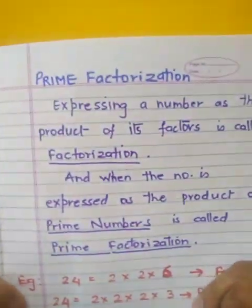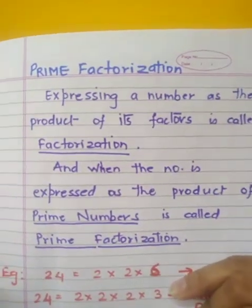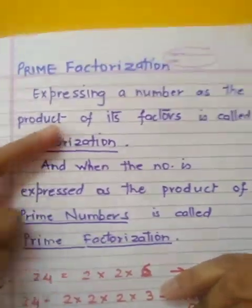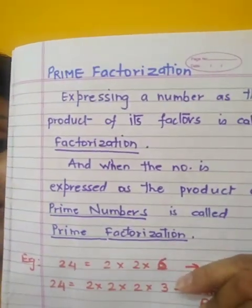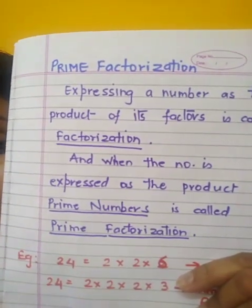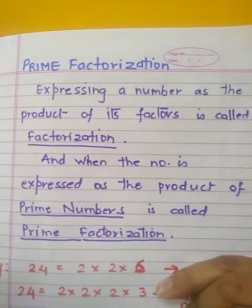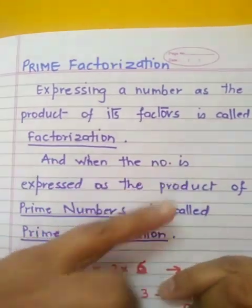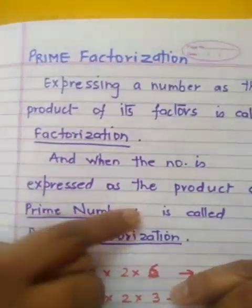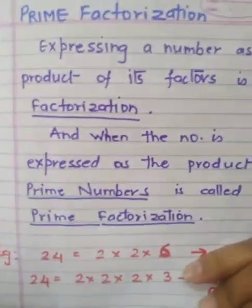So what is prime factorization? When all these factors are prime numbers, it is called the prime factorization method. Let me frame these words into a proper definition. Expressing a number as the product of its factors is called factorization — it is not compulsory what type of factors those are. But when the number is expressed as the product of prime numbers, that method is called prime factorization method.